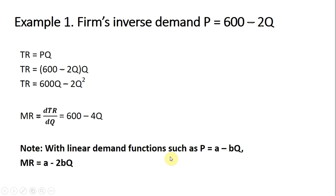using this shorthand idea here. Marginal revenue will be 600 minus 2 times the slope here or minus 4Q. So just something to keep in mind to double check your work.